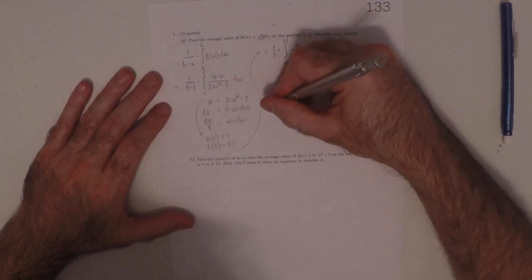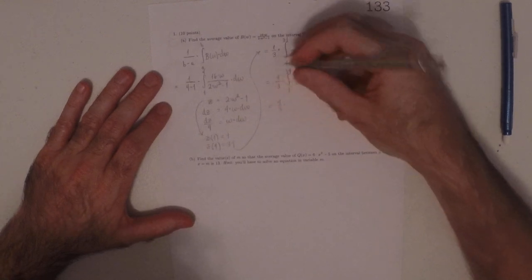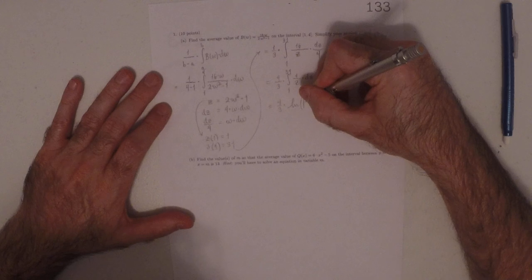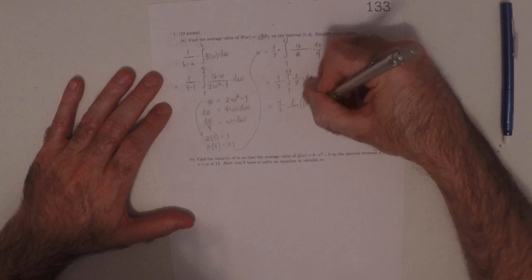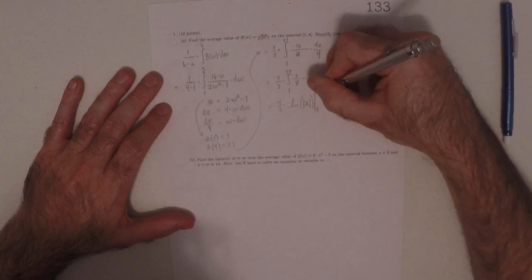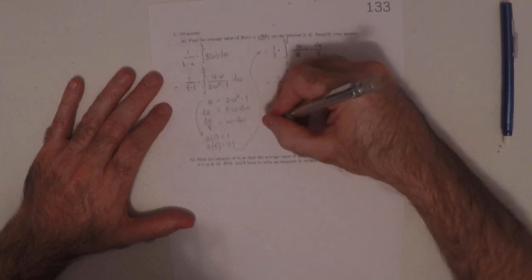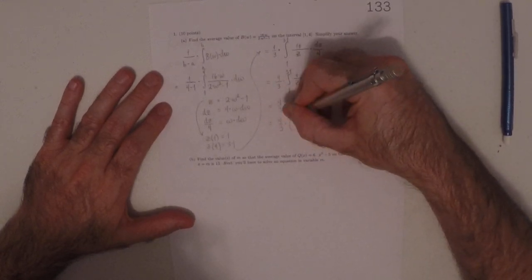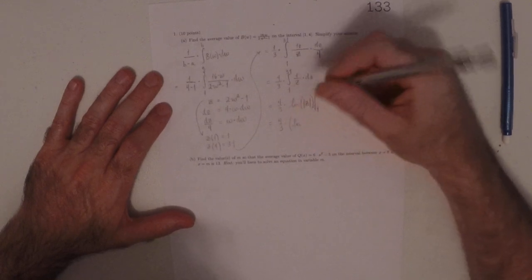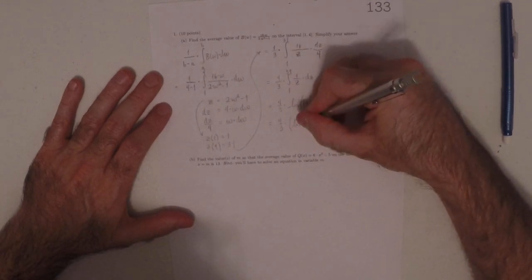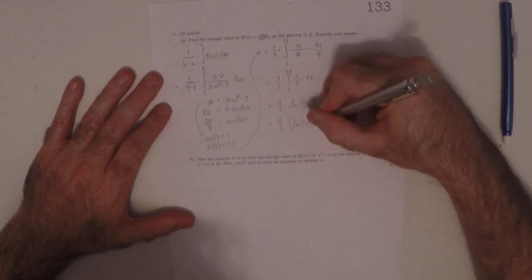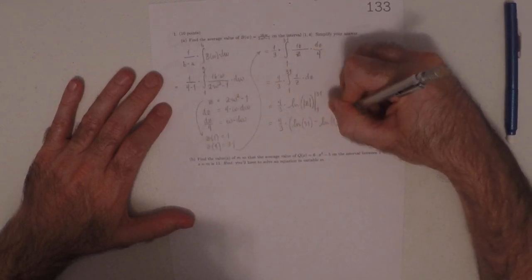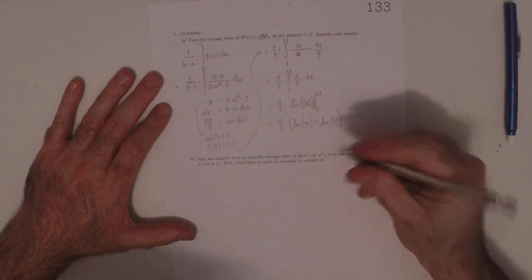So that's 4 thirds, logarithm absolute value z from 1 to 31. So 4 thirds times the logarithm. Well, the absolute value of 31 is just 31, and the absolute value of 1 is just 1.